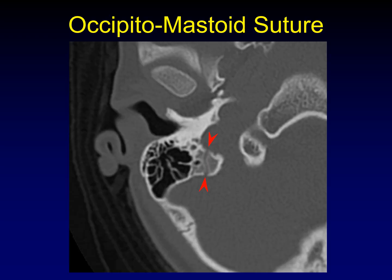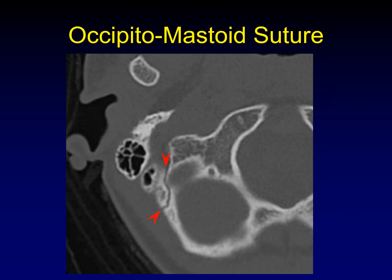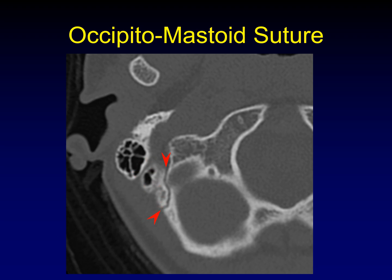Next is the occipitomastoid suture, and this one's a little tricky because it looks like you're just fracturing off a tiny little bit of bone here, but this is part of the occipital bone and this is part of the mastoid portion of the temporal bone — this is a normal structure. It extends back here, and you can see how that would be easily mistaken for an occipital fracture. This continues on and becomes the familiar lambdoid suture, extending all the way up the occipital bone to join its counterpart and become the sagittal suture.